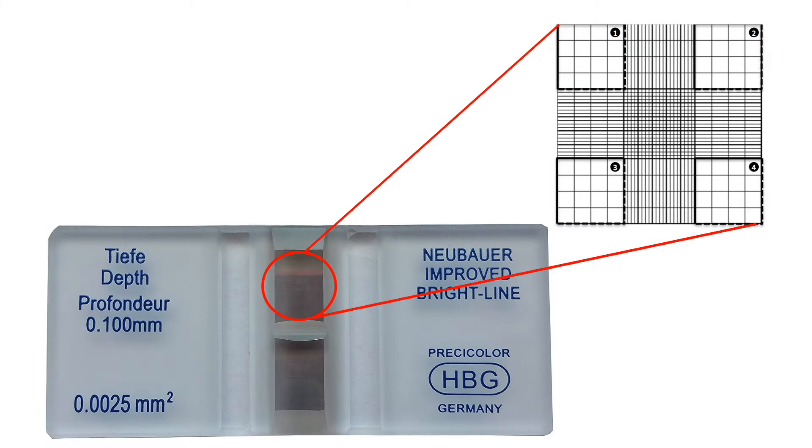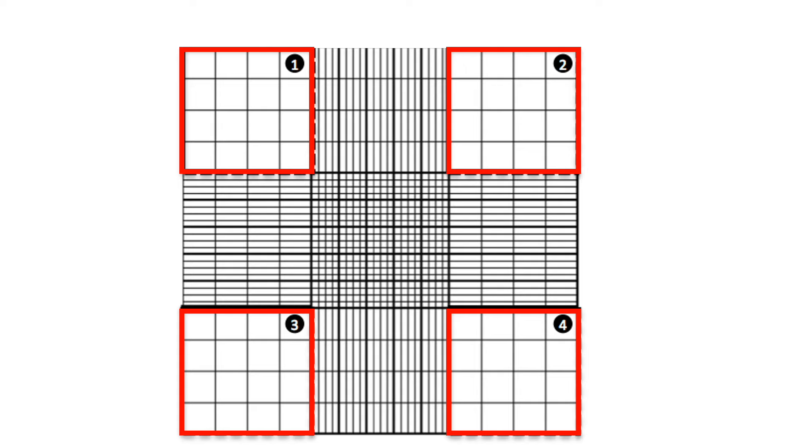So now let's count our cells. Remember that the hemocytometer has laser-etched grids. The two grids are composed of nine large squares. In order to count our cells, we will be focusing on the four corner squares. Each of these squares measures one millimeter by one millimeter or one millimeter squared.